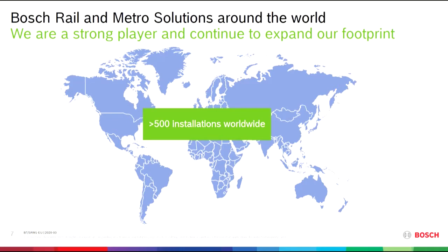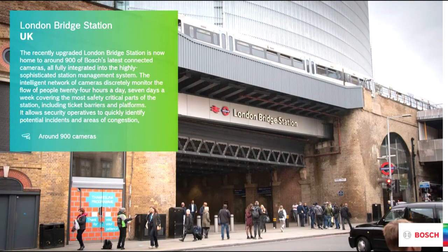Seeing is believing — in the meantime we have installed more than 500 projects on a global scale, and we are received as a serious and strategic partner to this vertical. The London Bridge station is the fourth busiest train station in the UK, with over 48 million people visiting every year — more than the population of Spain. The challenge was installing a new digital solution while the existing analog system was still running, and fully integrating the new system into third-party platforms.